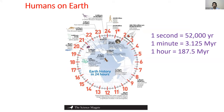Modern humans as we are today appeared at 23:59:56 — only four seconds. And in those four seconds, we have done so much pollution in the environment. We are using so much resources and creating so much waste. In slightly more than 200,000 years — four seconds — we have created a mess of this planet.